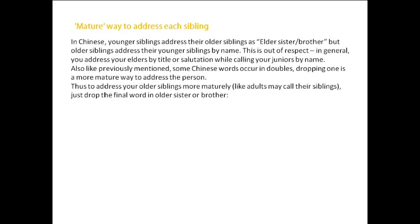Here is a more mature way, or so-called more mature way, to address your siblings. In Chinese, the younger siblings address their older siblings as elder sister or brother. But older siblings address their younger siblings by name. This is out of respect. In general, you address your elders by title or salutation while calling your juniors by name.